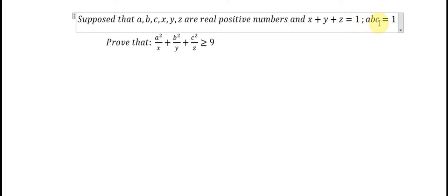to 1, abc multiply together equal to 1, and we need to prove that a² divided by x plus b² divided by y plus c² divided by z greater or equal to